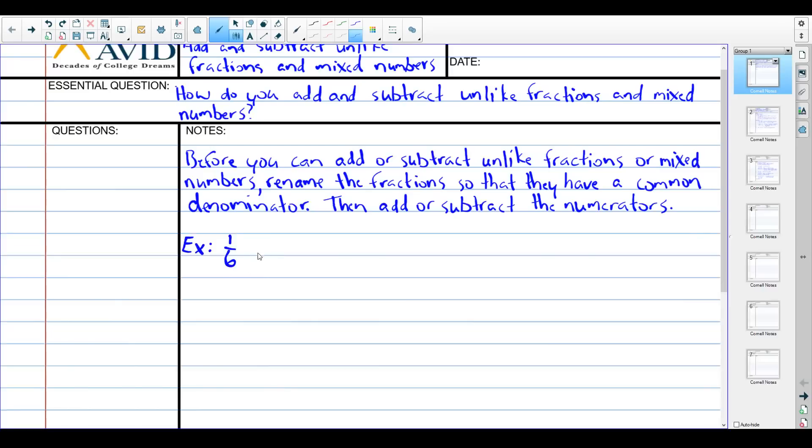So our first one is just 1 sixth plus 2 thirds. Fairly straightforward, just two fractions with unlike denominators. So the very first thing we do is we rename our two fractions. So a common denominator between 6 and 3 is 6. So 1 sixth doesn't actually change, but 2 thirds we would rewrite as 4 sixths. Once we have common denominators, then we just add our numerators. We add our top numbers. So 1 plus 4 is 5. So 1 sixth plus 4 sixths is 5 sixths. And that is our answer.